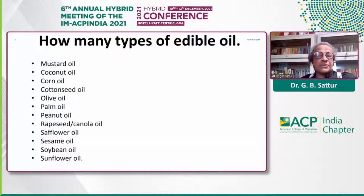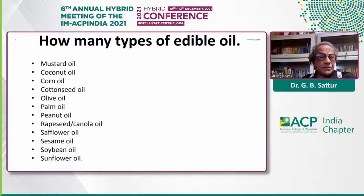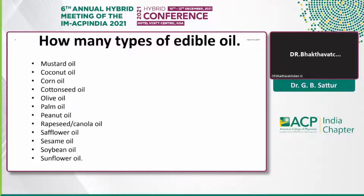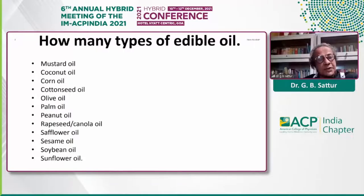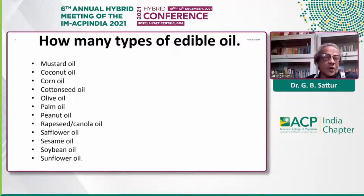Now let us see which oils we'd like to choose. In India, there are many options — right from mustard oil, coconut oil, corn oil, cotton seed oil, olive oil, palm oil, peanut oil, rapeseed oil — called canola in the US. Britishers don't like the word 'rape,' so they call it canola oil, while in the US it is called rapeseed. And even in India, we have safflower oil, sesame, soybean, and sunflower.